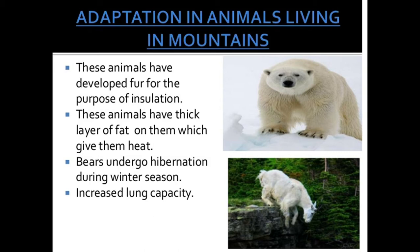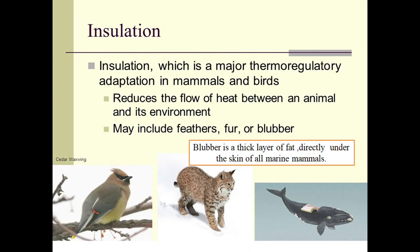What is insulation? Insulation is a major thermoregulatory adaptation in mammals and birds. It reduces the flow of heat between an animal and its environment and may include feathers, fur, or blubber. Blubber is a thick layer of fat directly under the skin of all marine mammals — whales and dolphins have blubber. The sea cat is also covered with fur to keep warmth inside its body.